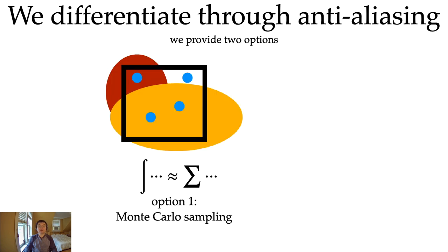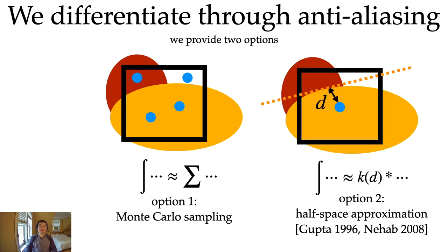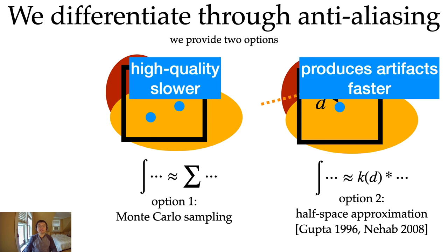As I mentioned earlier, we need to support anti-aliasing and differentiate through it. We provide two anti-aliasing options that have different characteristics. Our first option is based on Monte Carlo sampling, where we discretize the anti-aliasing integral into discrete sum by sampling the domain. Our second option is based on approximating shapes using the closest point to form a half-space. This allows us to analytically approximate the integrals. The Monte Carlo solution is higher quality but slower, and the half-space approximation is faster but can produce some artifacts.